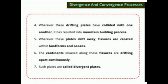Whenever these drifting plates collide with one another, it has resulted in mountain building processes. Whenever these plates drift away, fissures are created, forming landforms and oceans. When drifting plates collide, mountains are formed; when they move away from each other, oceans and plain land surfaces are formed. The continents situated along these fissures are drifting apart continuously — such plates are called divergent plates.